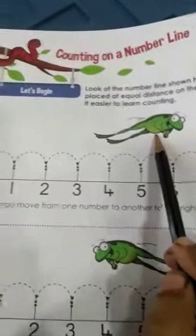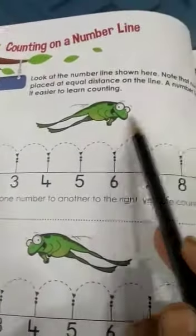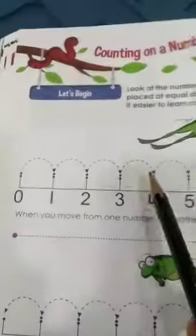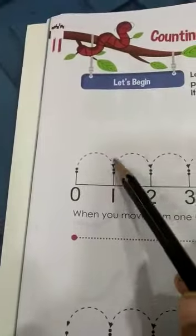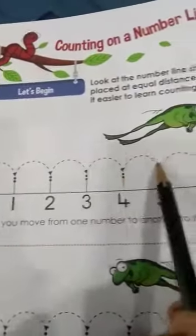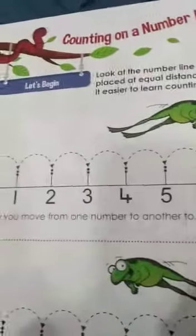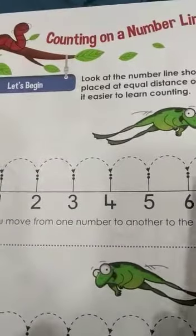You can see a frog jumping, right? The frog is jumping to which side? You have learned left and right. This is the right side. So when the frog jumps to the right side, you are counting forward. How will you count? 0, 1, 2, 3, 4, 5, 6, 7, 8, 9, 10. That is counting to the right side — that is counting forward.